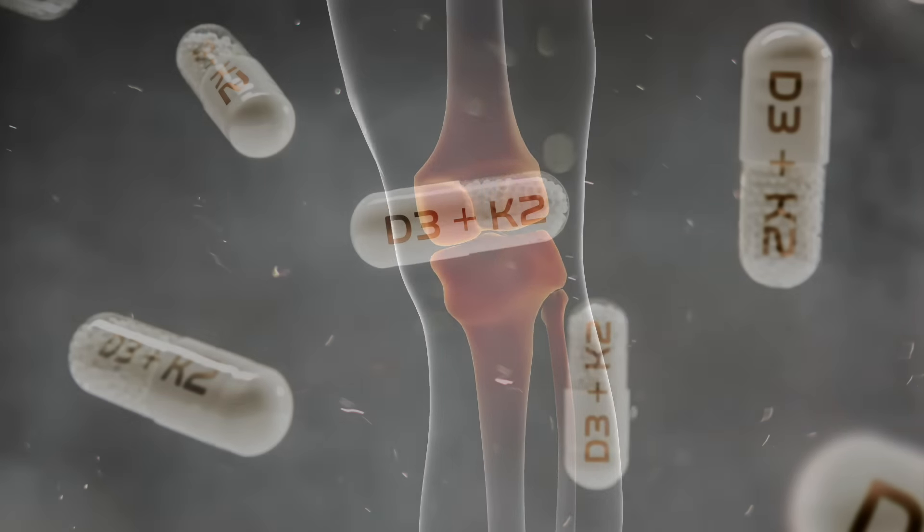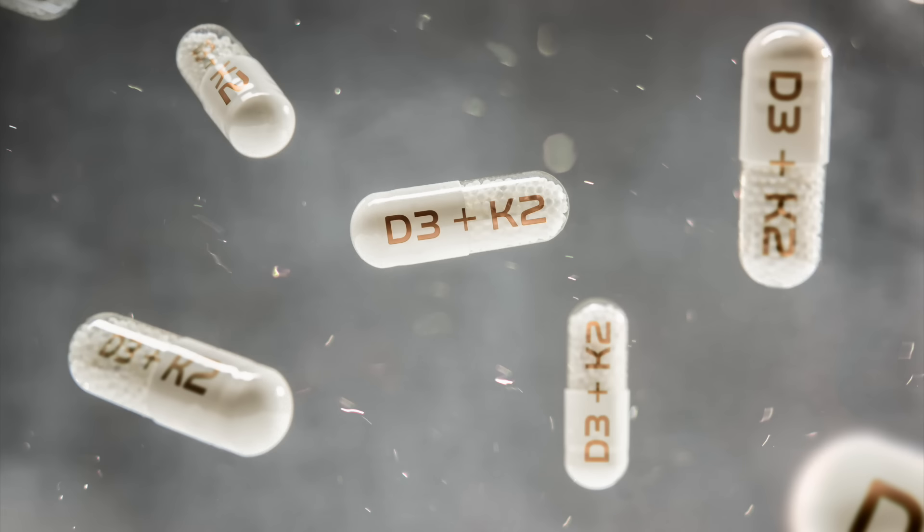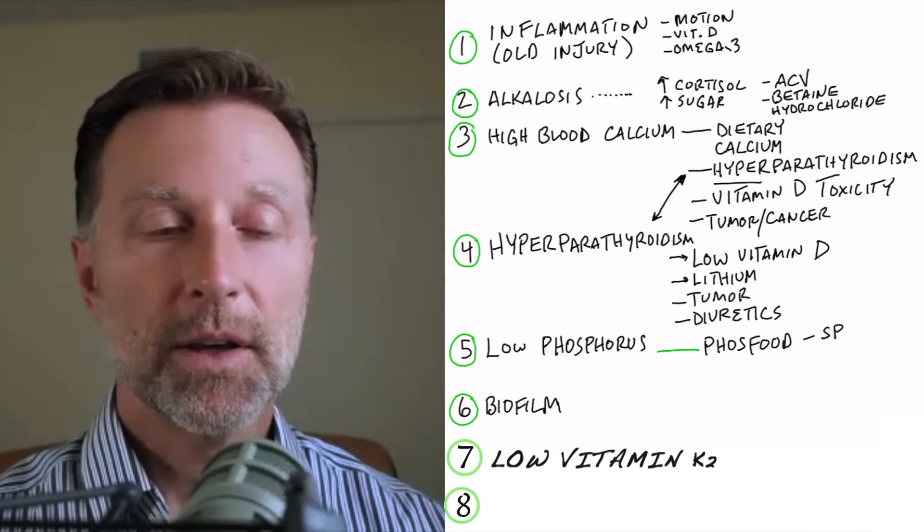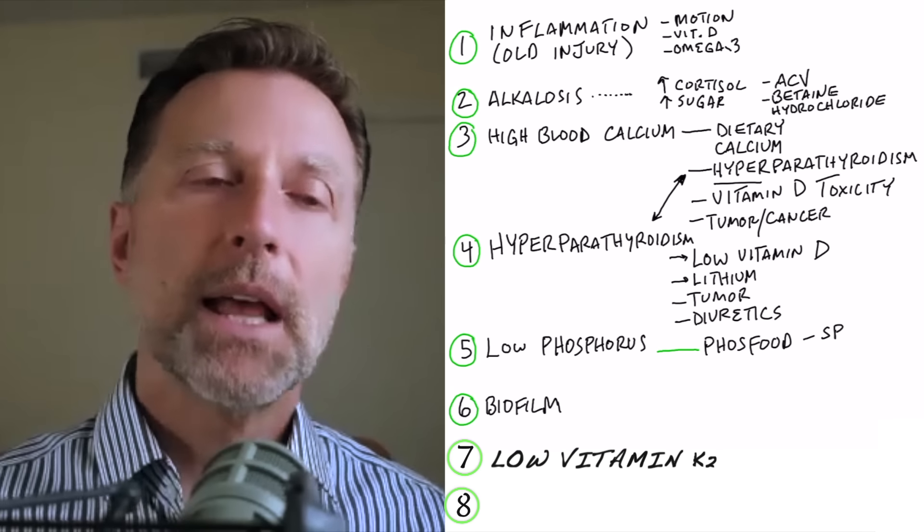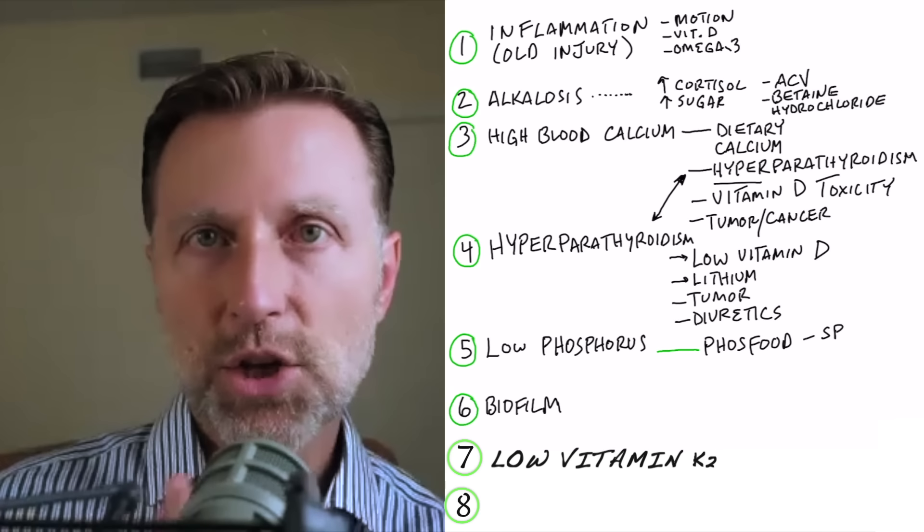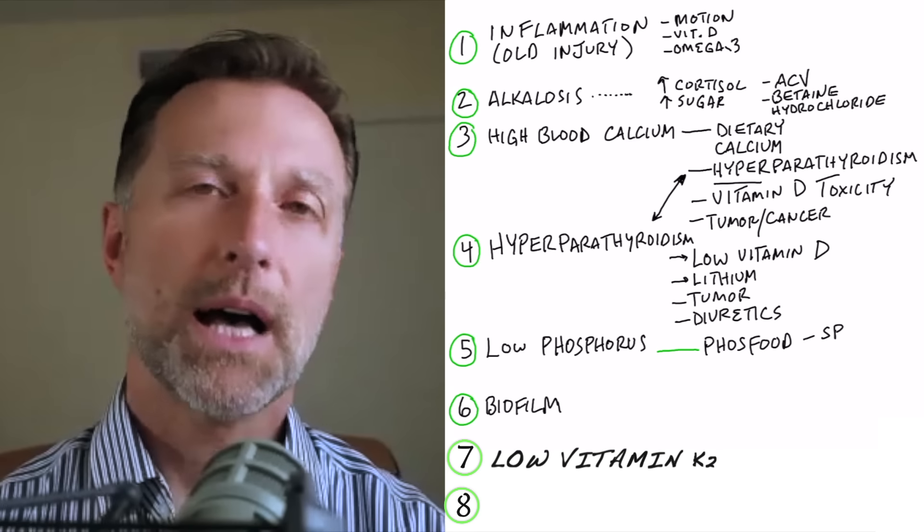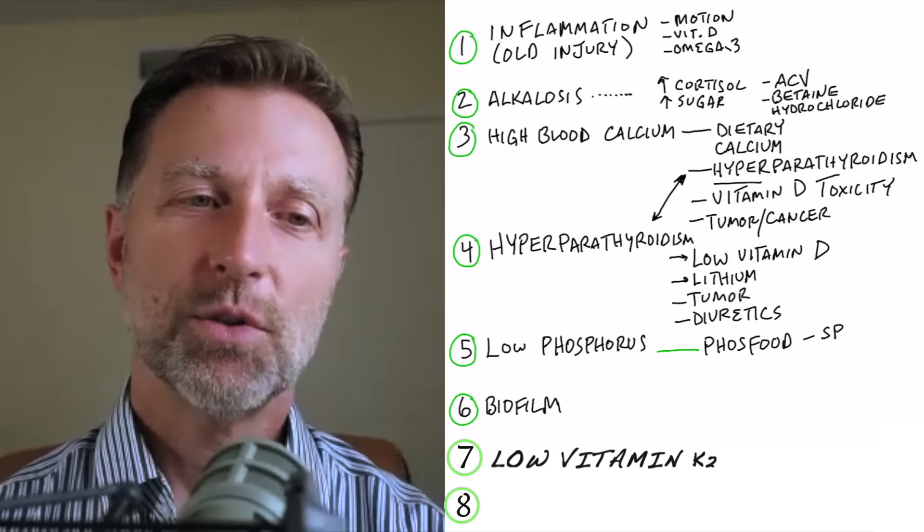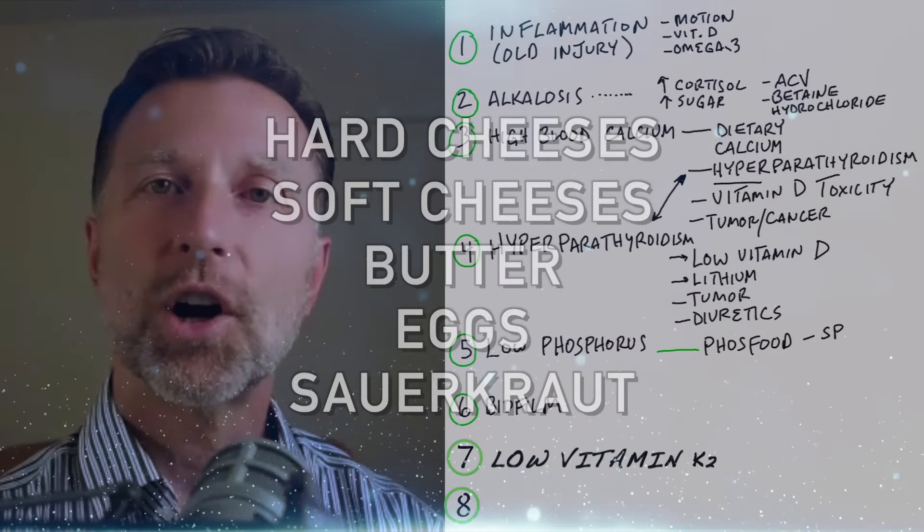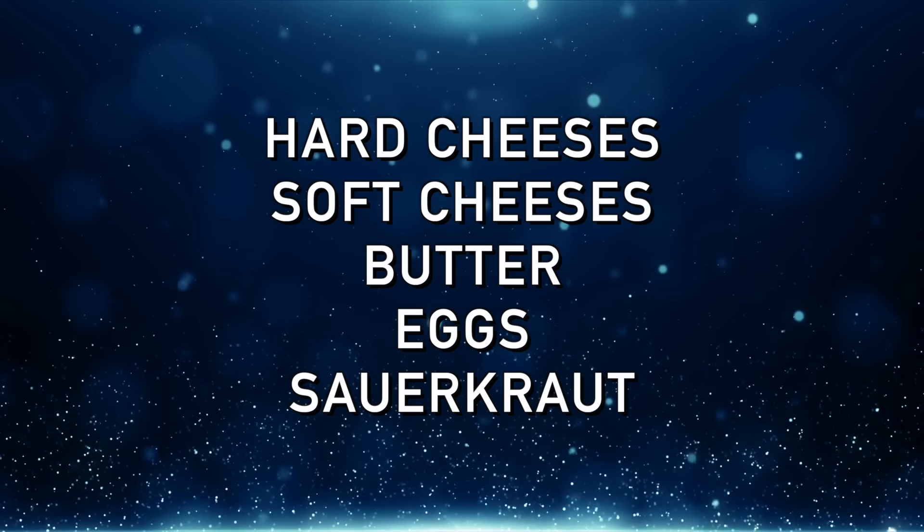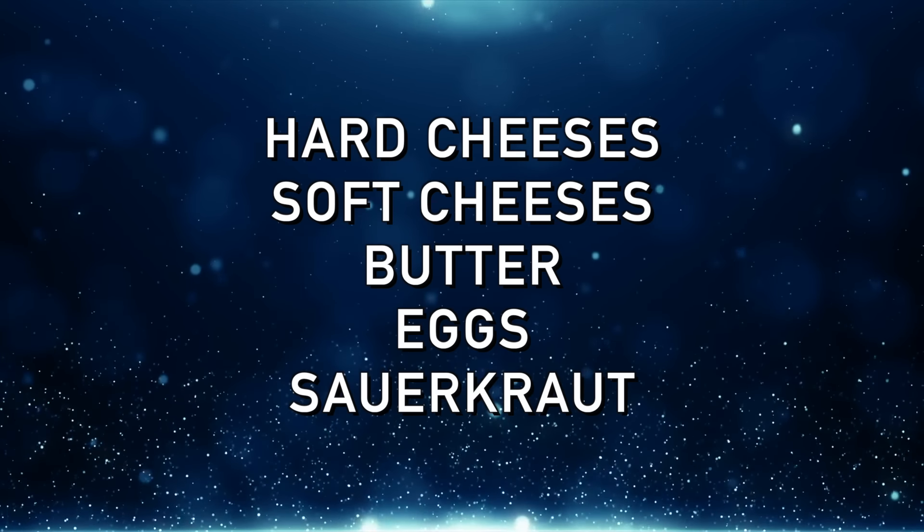Now, vitamin K2. Vitamin K2 works with vitamin D3. K2 directs the calcium to go into the bone. So that way, it works with vitamin D. Vitamin D brings it into the blood. K2 takes it from the blood into the bone to make your bone really solid. So if you're lacking vitamin K2, you could potentially start having all sorts of deposits. And vitamin K2 is in hard cheeses, soft cheeses. It's in butter, eggs, and even sauerkraut.